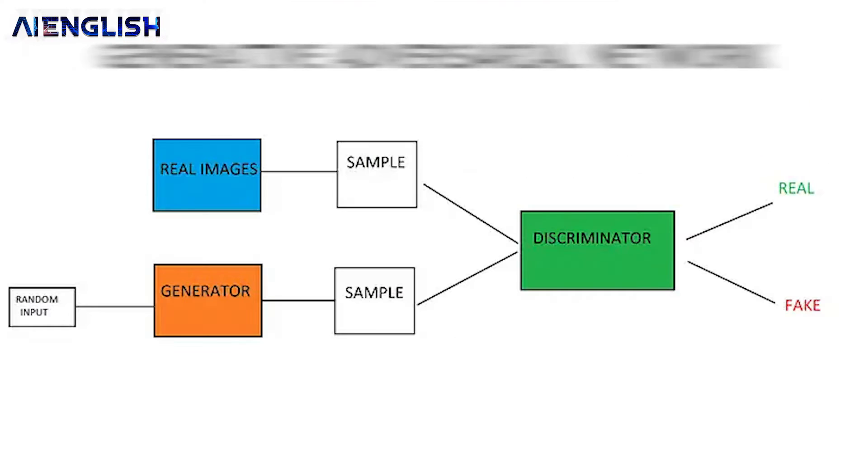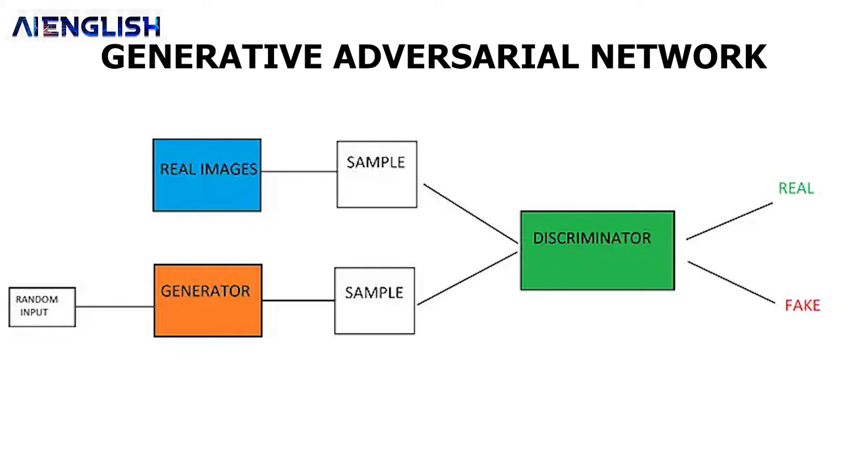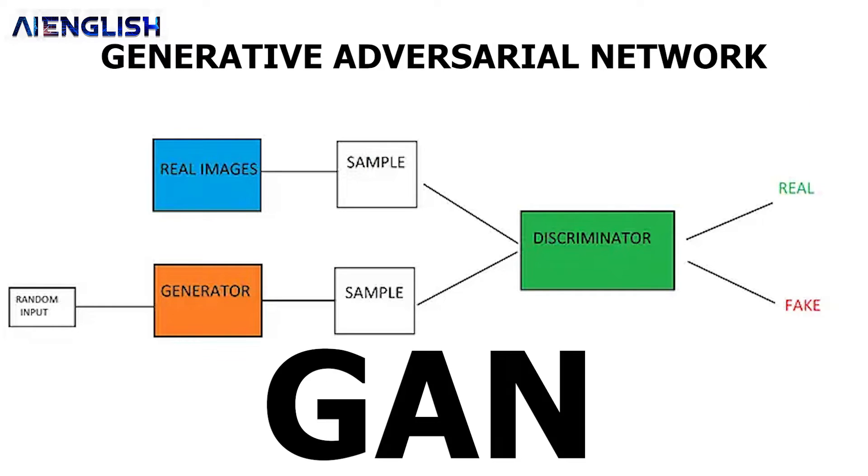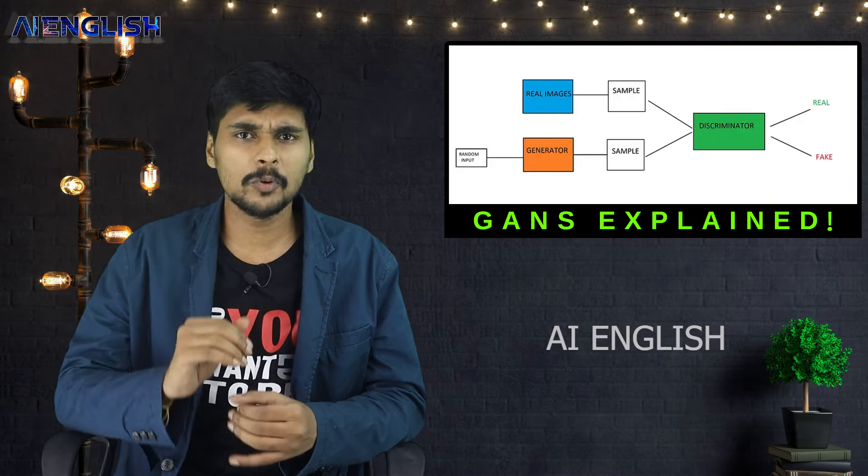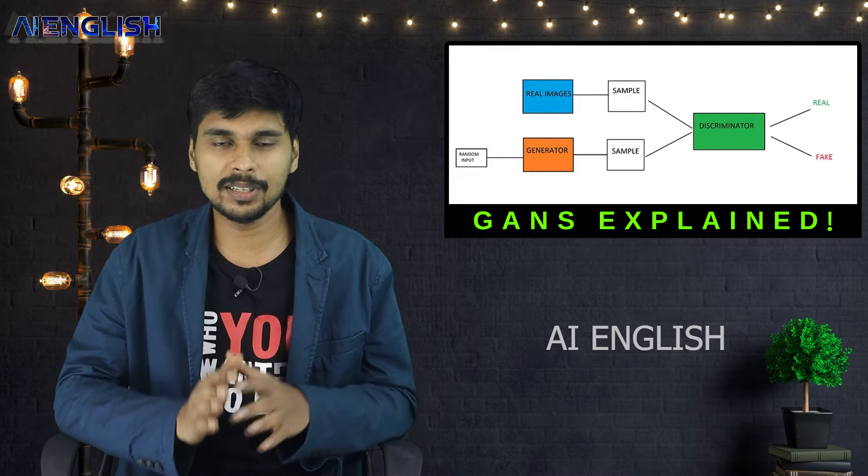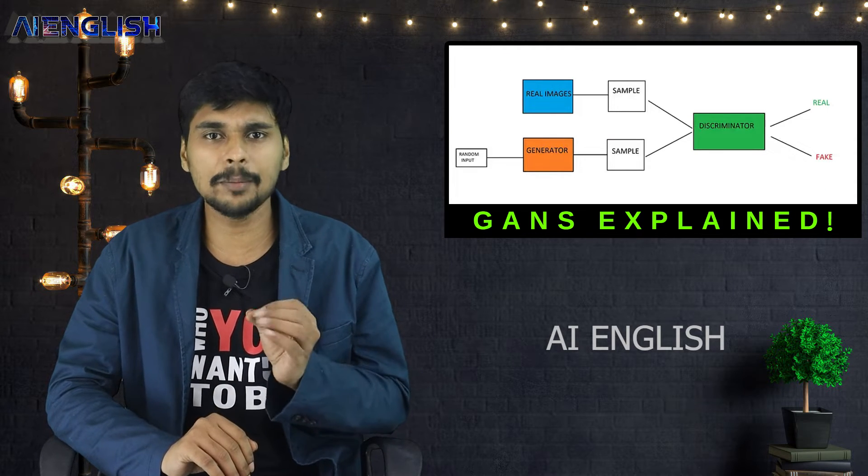The technology behind this app is Generative Adversarial Networks. In short form, we call it GANs. But what is GAN? To be technical, it's difficult to understand. So let me give you a very basic example.